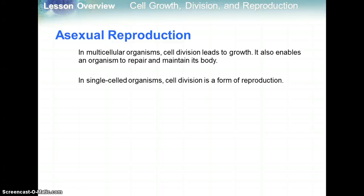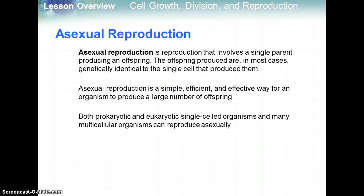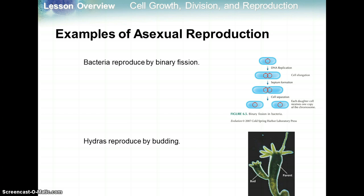Asexual reproduction involves a single parent, and the offspring produced are in most cases genetically identical — like a clone — to the organism that produced them. It's a simple, efficient, and effective way for an organism to produce a large number of offspring. Both prokaryotic and eukaryotic single-celled organisms and many multicellular organisms reproduce asexually. Bacteria, for example, reproduce by binary fission: one cell copies its DNA, splits into two, and we have two exact copies of the parent bacterium. A multicellular organism called a hydra reproduces by budding — the bud is an exact copy of the parent hydra.